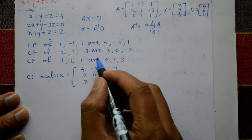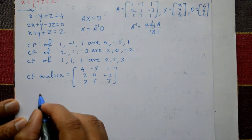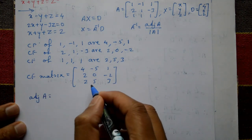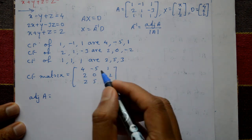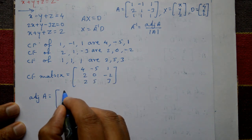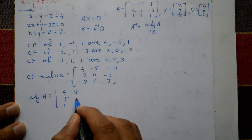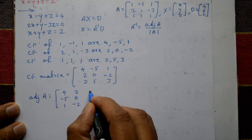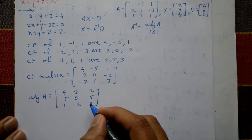First we require the adjoint of A. Taking the co-factors of each element, the adjoint of A is very simple — just exchange rows into columns, that is, interchange rows and columns. The first row becomes the first column: 4, -5, 1. The second row becomes the second column: 2, 0, -2. The third row becomes the third column: 2, 5, 3. This is the adjoint of A.